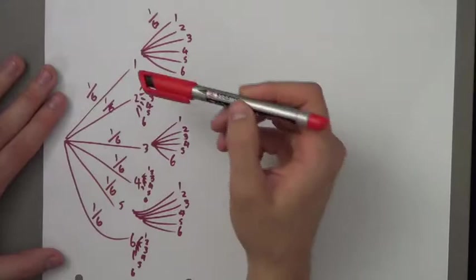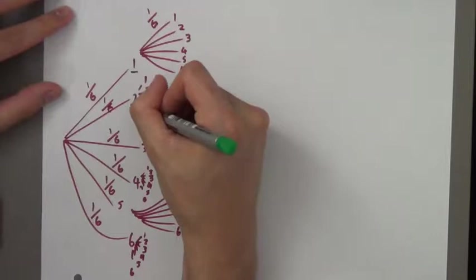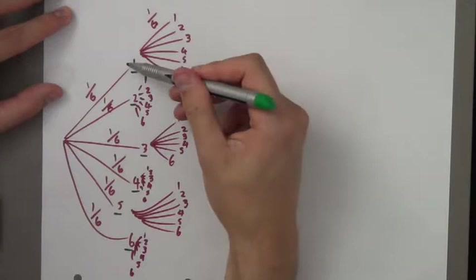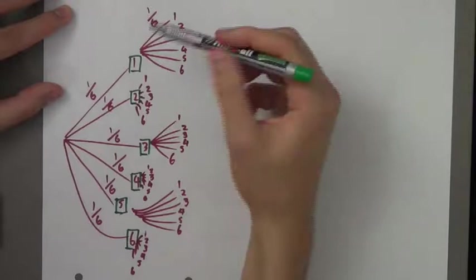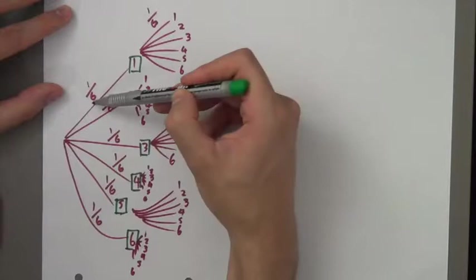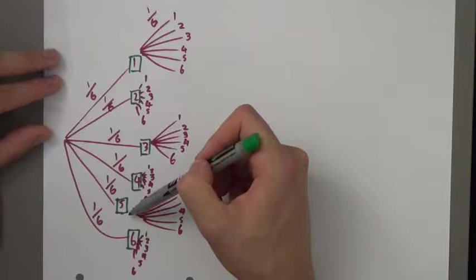The first dice — we have six possibilities. We've got a number one, number two, number three, number four, number five, or a number six. So we've got a 1/6 chance of rolling a number one, a 1/6 chance of rolling a number two, a 1/6 chance of rolling a number three, 1/6 chance of rolling a number four, 1/6 chance of rolling a number five, and a 1/6 chance of rolling a number six.